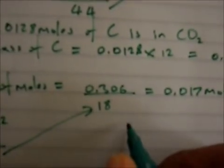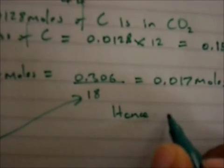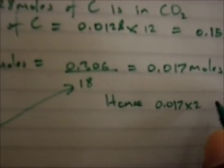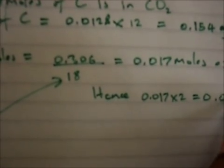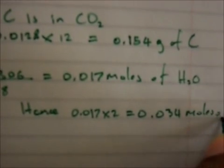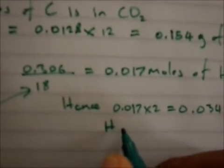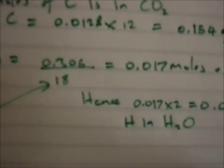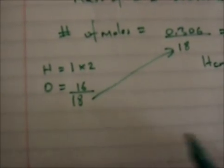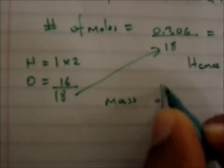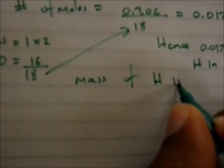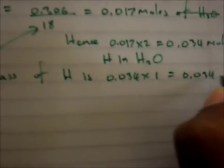Since there are two hydrogens in H₂O, the moles of hydrogen is 0.017 times 2, giving 0.034 moles of hydrogen. The mass of hydrogen is then 0.034 times 1, which equals 0.034 grams.